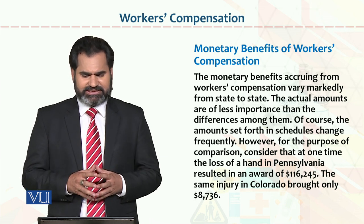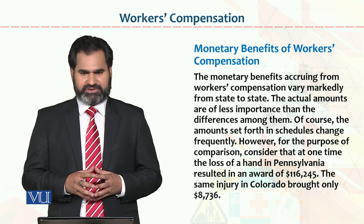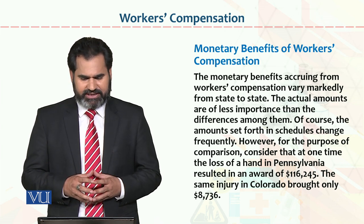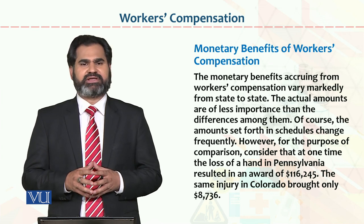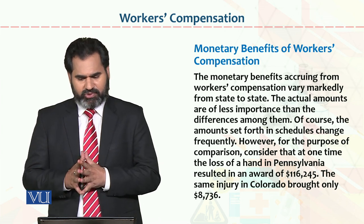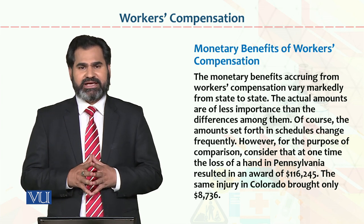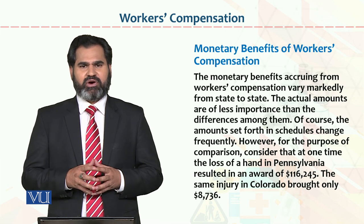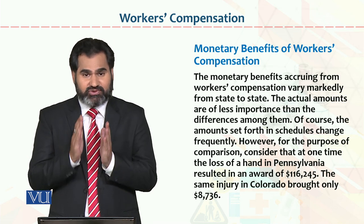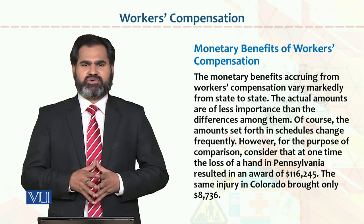For purpose of comparison, consider that the loss of a hand in Pennsylvania resulted in an award of $116,000, whereas the same injury in Colorado brought only $8,736. Iska matlab yeh hai ki in dono states ke andar jo compensation laws hain woh different hain. Is difference ko importance isliye diya ja raha hai taake samjha ja sake ke itna zyada difference kyun hai, aur log kisi bhi state mein kaam karne ki preference ko consider na karein.